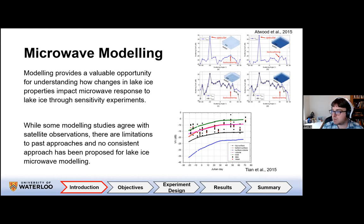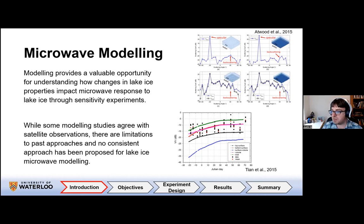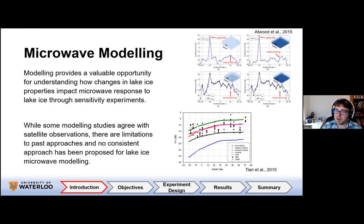We've changed from a double bounce primary mechanism towards a single bounce focusing on roughness of the ice-water interface. While modeling studies generally agree with satellite observations, there are limitations to past approaches and no consistent approach for modeling lake ice in the microwave domain has been proposed. This is one of the reasons we talk about SMRT, the Snow Microwave Radiative Transfer model, because it presents a common approach.